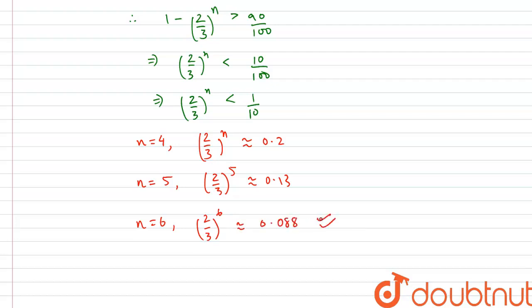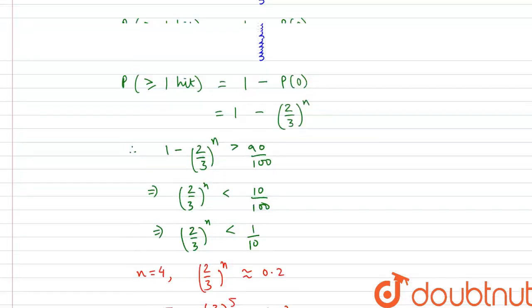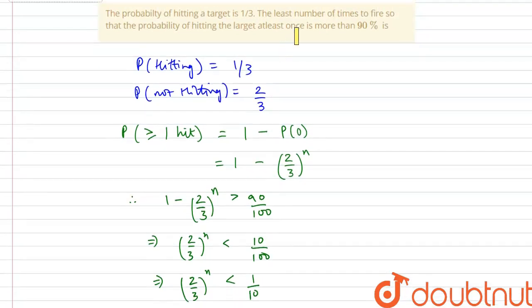And this would be our correct choice. So n is equal to 6, or the minimum number of tries to ensure a probability of hitting more than 90% would be 6.